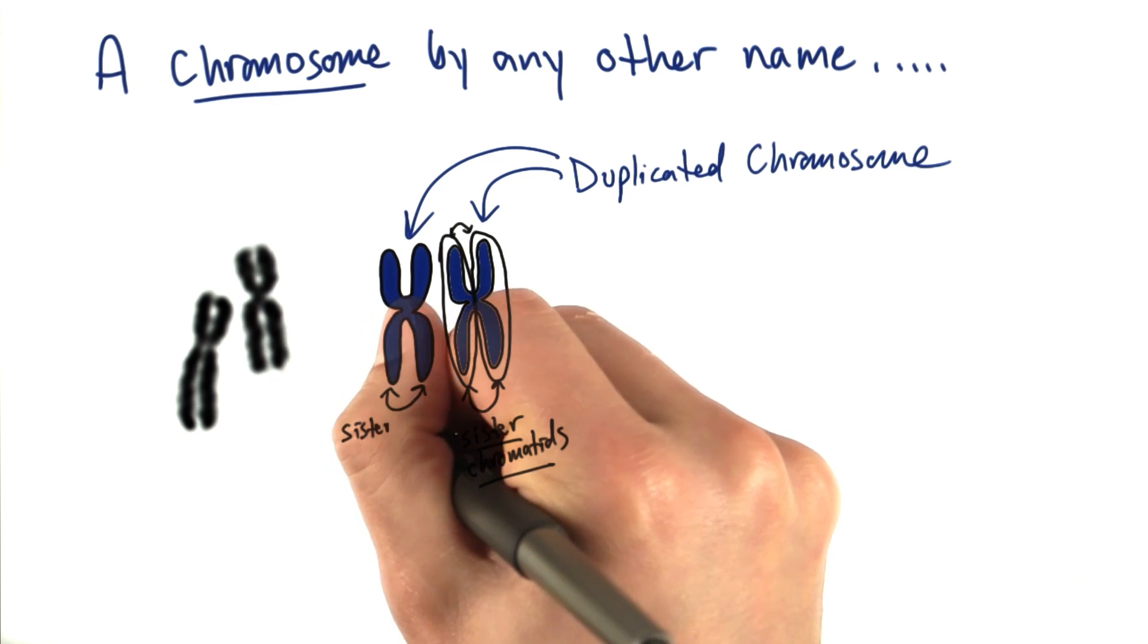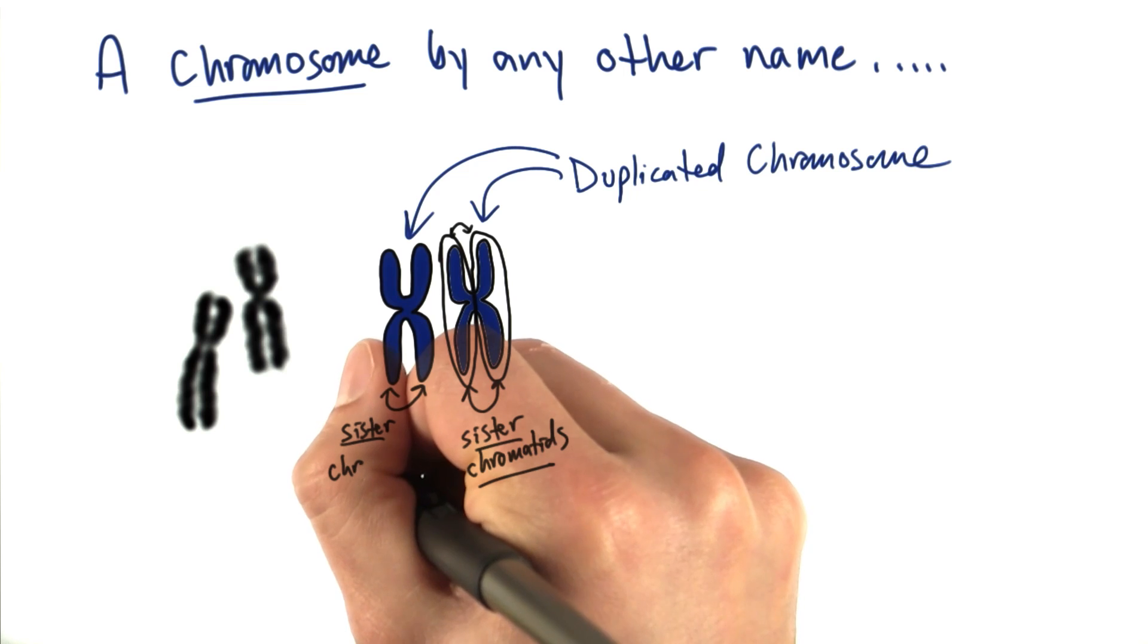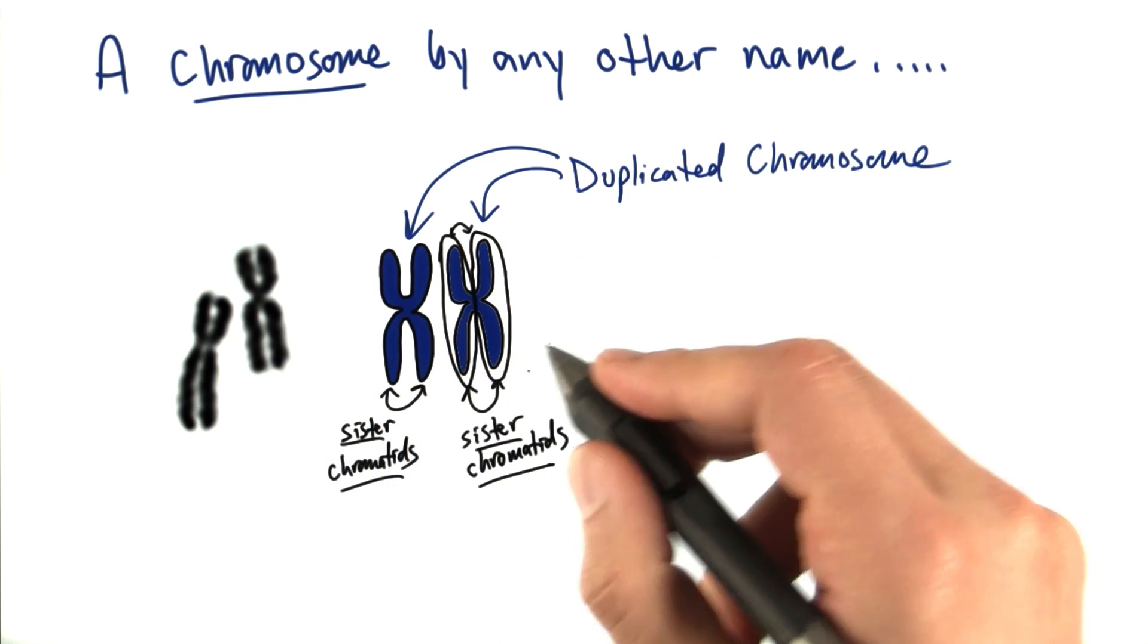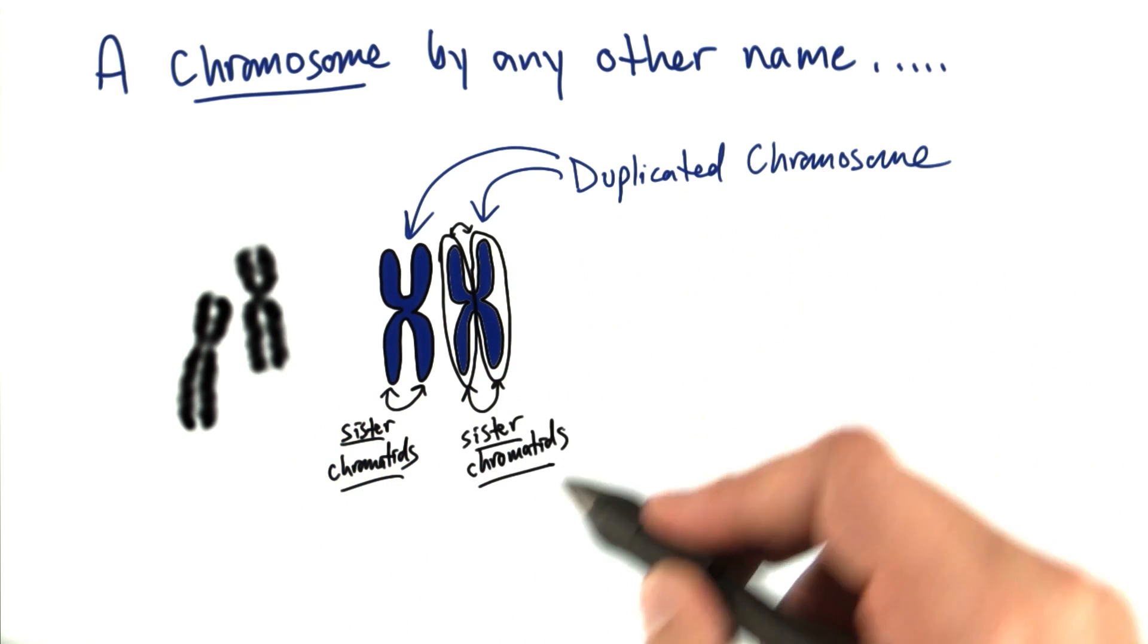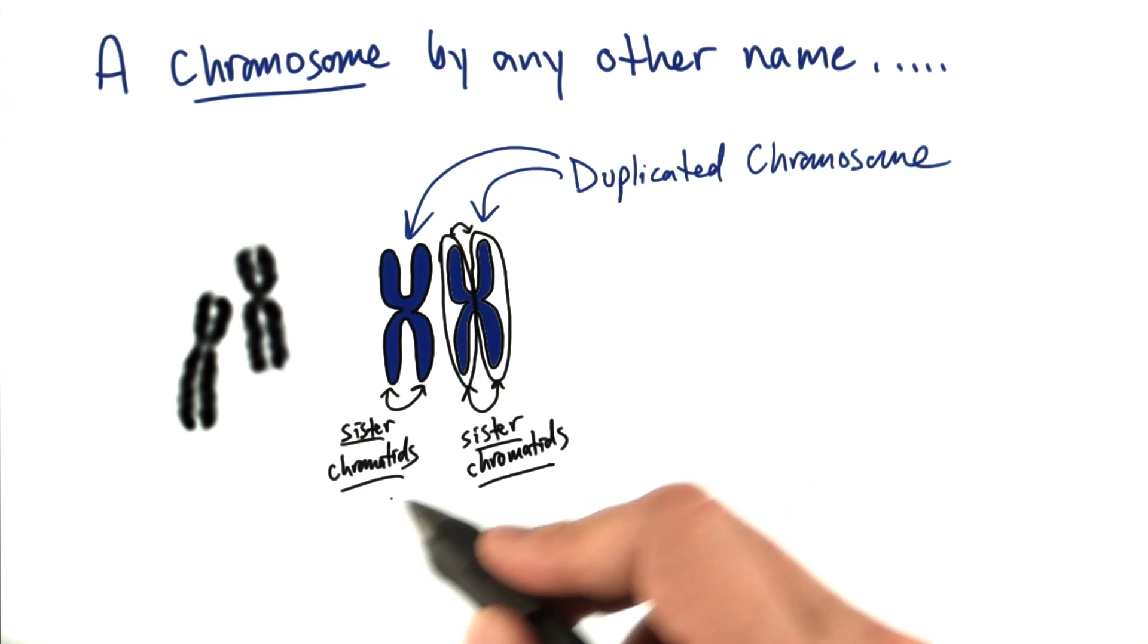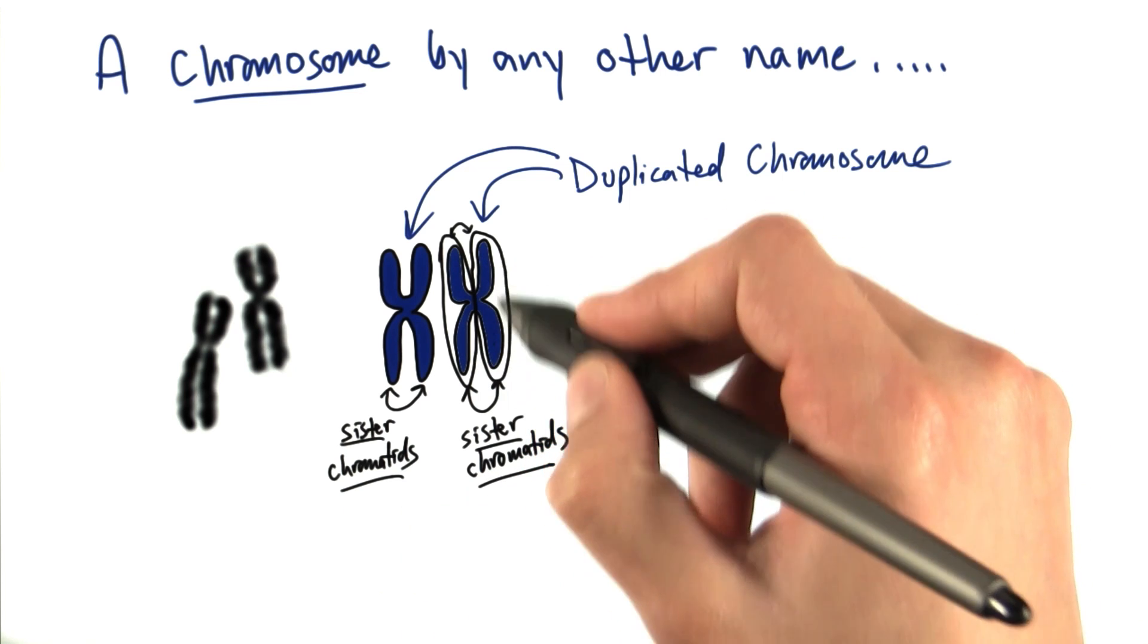This chromosome over here also has sister chromatids. So we have one pair of chromosomes, one pair of X's, and they each are composed of sister chromatids, which are duplicated strands of each other.